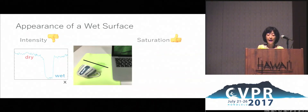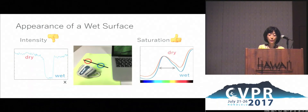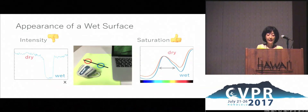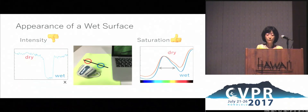Next, if we look at the spectrum of two pixels — one from a dry region in this red circle and another from a wet region in this blue circle — and normalize the overall spectrum energy to focus on the spectral differences, you can see that the spectral distribution of the wet surface is more concentrated about its mode, in this case green. In other words, the spectrum is sharpened, leading to an increased saturation of the surface colour.